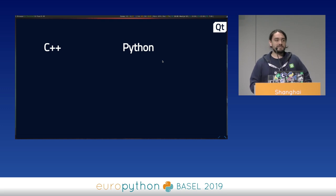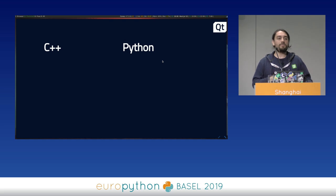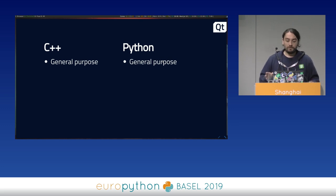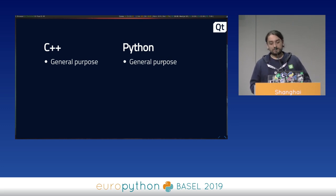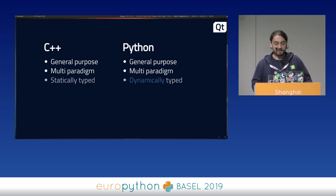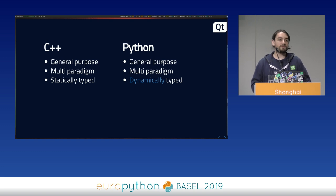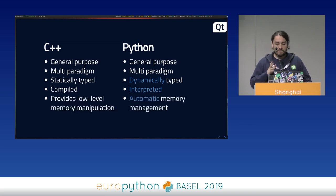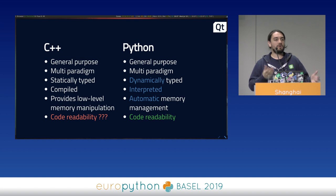The Qt project in general is a C++ framework — a huge framework. And when starting to do some Python stuff, you need to have the mandatory comparison between the two languages. We know that both languages are general purpose, and also multi-paradigm — you can do many things with them. Then we start to notice some differences: dynamically typed versus statically typed, compiled versus interpreted, memory management, and code reliability.